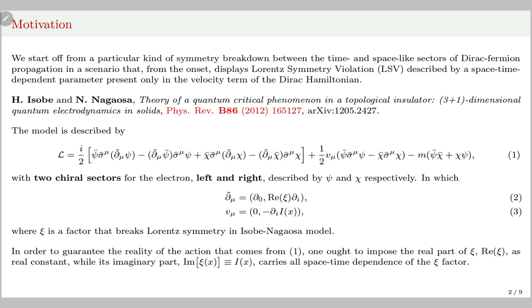In face of that consideration, the Lagrangian of the model must be written as equation one, where psi is the left electron and chi is the right electron.